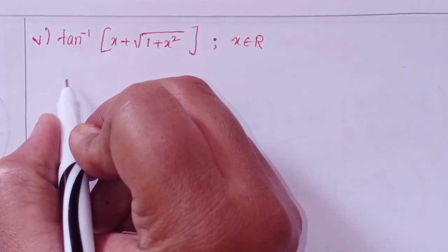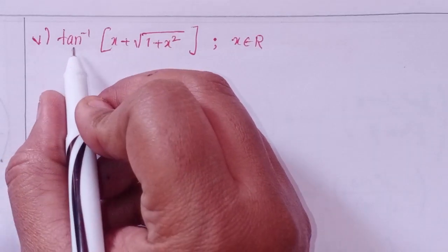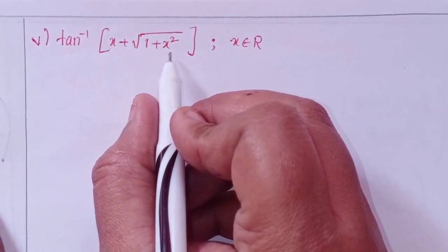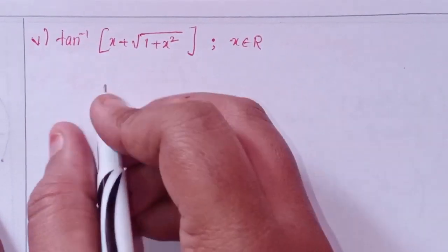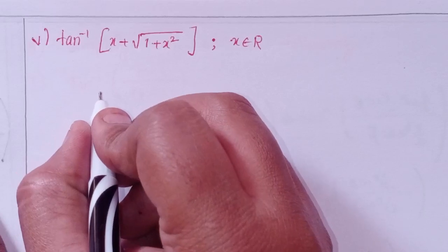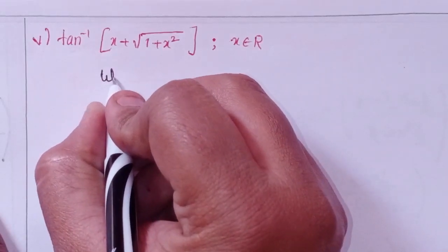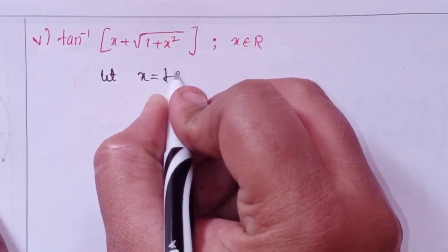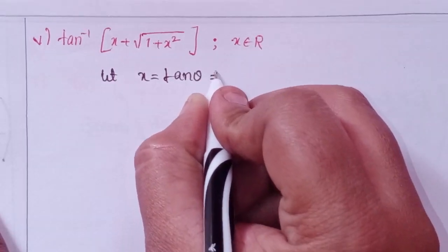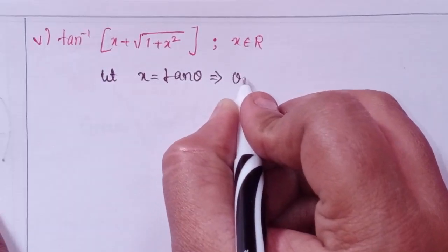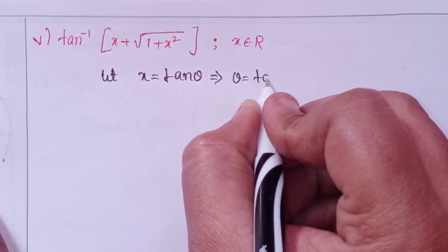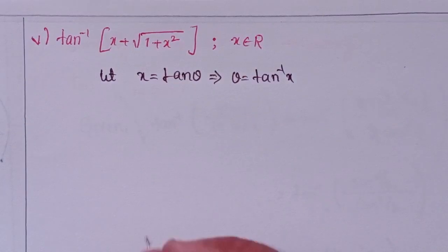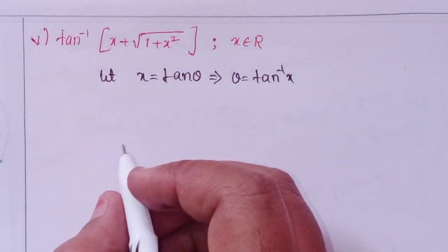Last, fifth one: given tan inverse of (x plus square root of 1 plus x²). Let x equal tan θ, which implies θ equals tan inverse x.